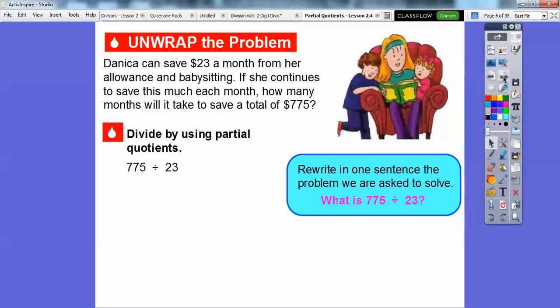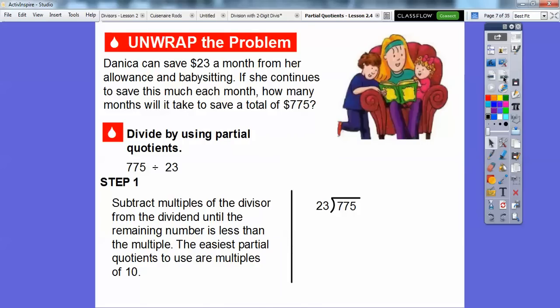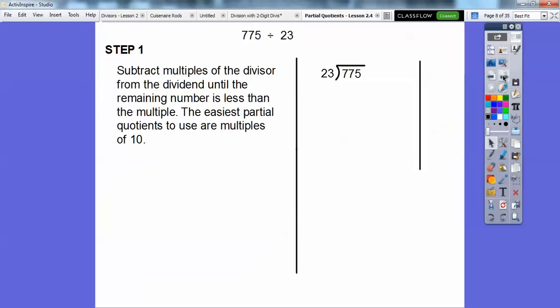We're going to divide by using partial quotients. So we're going to divide 775 divided by 23. We're going to subtract multiples of the divisor. Remember, the divisor is this number right here, the 23. Multiples of the divisor from the dividend until the remaining number is less than the multiple. The easiest partial quotient to use are multiples of 10. Let me show you right here.